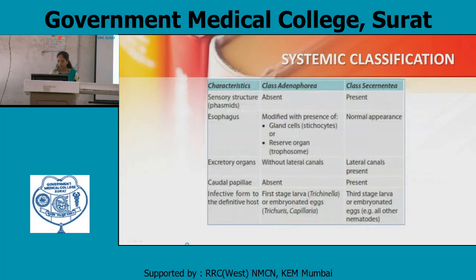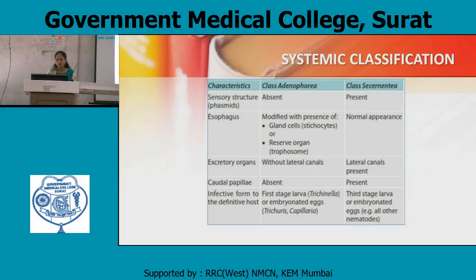First we will see the systematic classification of nematodes. Class Adenophoria and Class Secernatea. The first characteristic is sensory structure — phasmids. In Class Adenophoria, phasmids are absent; in Class Secernatea, they are present. The esophagus in Adenophoria is modified with gland cells, stichocytes, or reserve organs called trophosomes. In Secernatea it is normal in appearance. Excretory organs in Adenophoria are without lateral canals; in Secernatea, lateral canals are present.